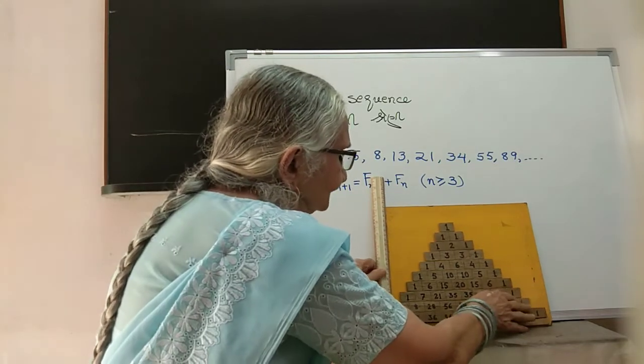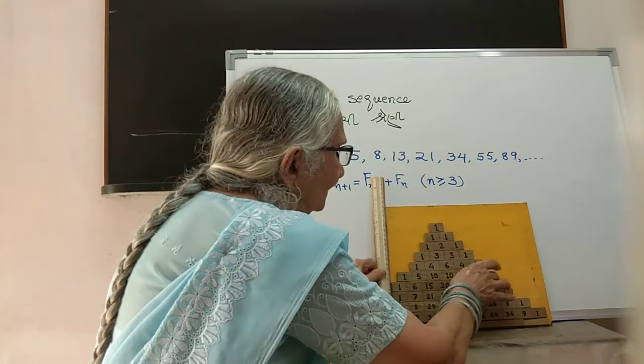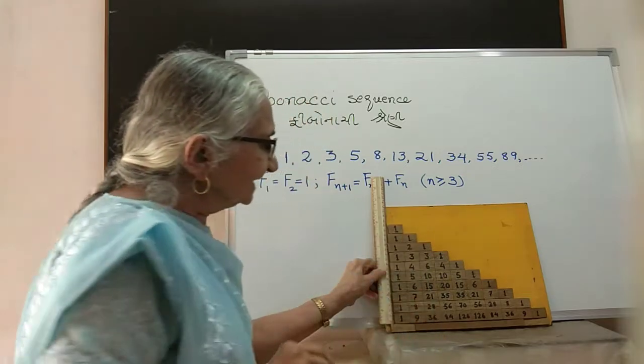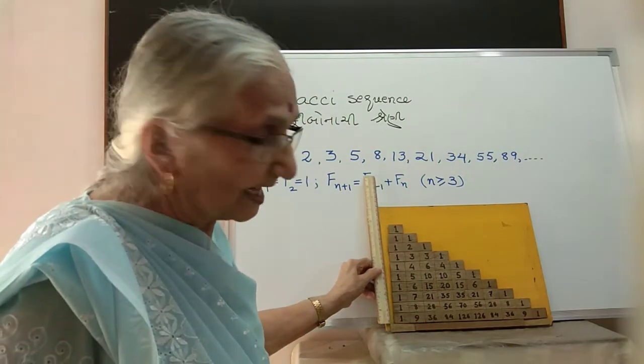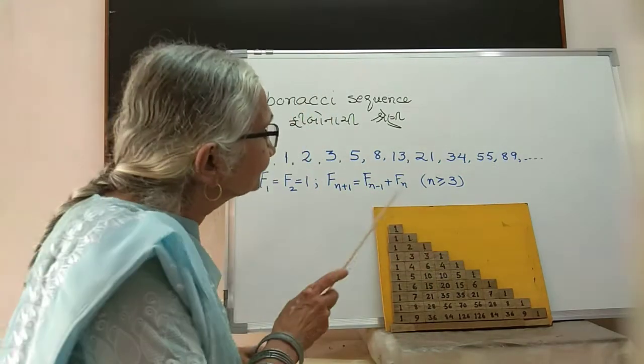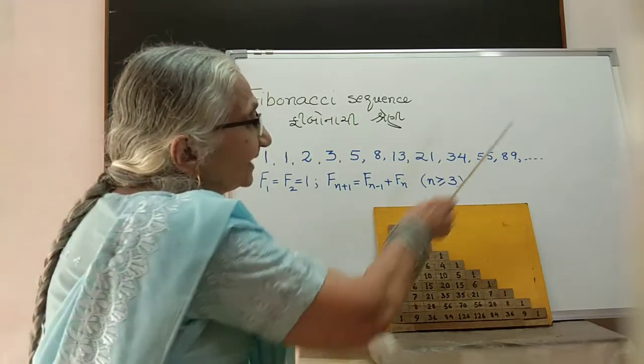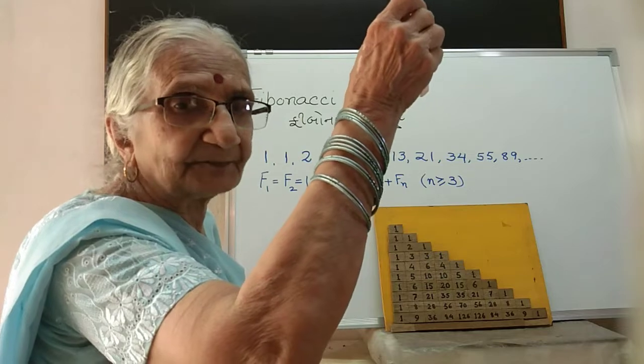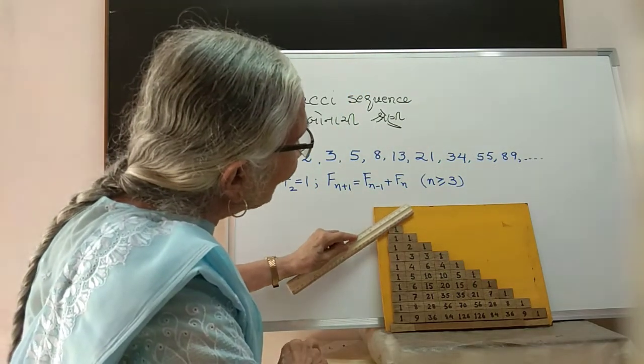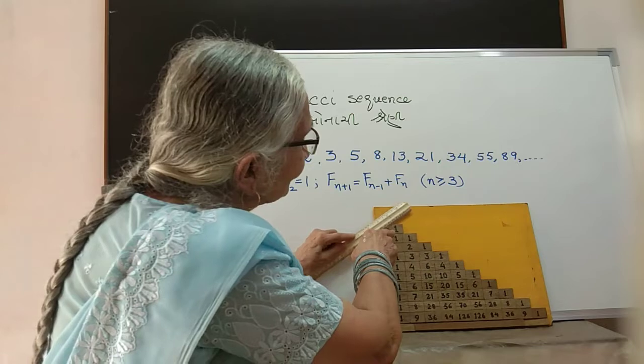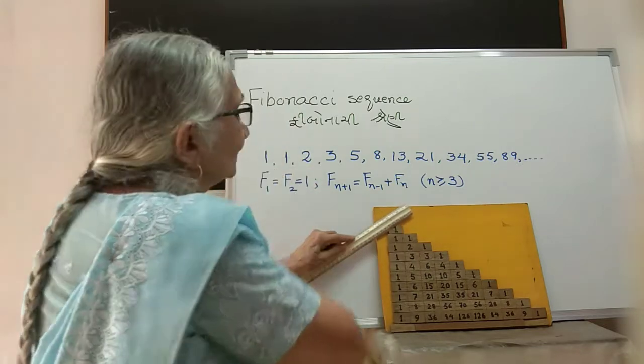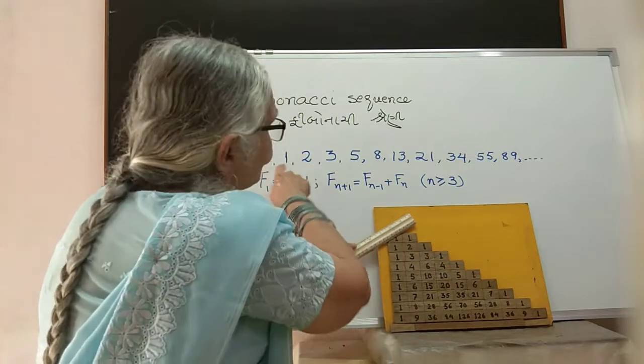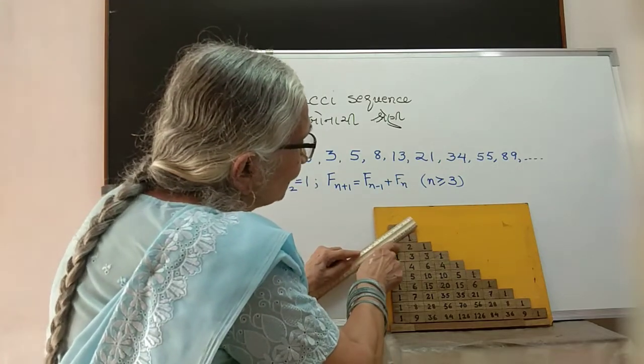This Pascal's triangle is surprisingly very nicely connected with this, and it is like this. Remove the numbers in such a way that we'll get a right triangle. Now what we do is we are going to go like this diagonally, rightwards and upwards.